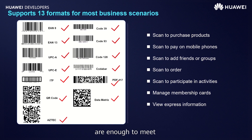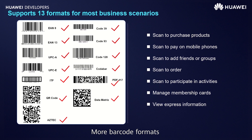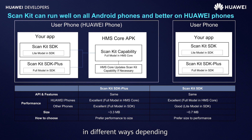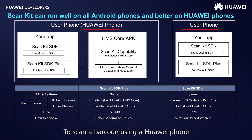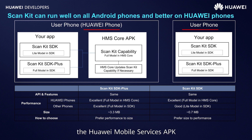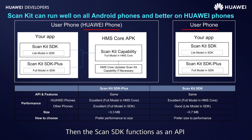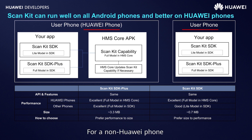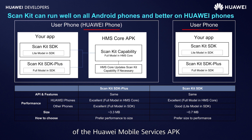The 13 supported barcode formats are enough to meet your current requirements, and more barcode formats will be supported in the future. ScanKit works in different ways depending on whether the phone is a Huawei phone or a non-Huawei phone. To scan a barcode using a Huawei phone, ScanKit calls the Huawei Mobile Services APK, which decodes the barcode and returns the result. Then the Scan SDK functions as an API to obtain the result. For a non-Huawei phone, the Scan SDK handles the scanning process instead of the Huawei Mobile Services APK.